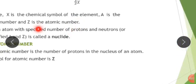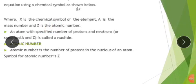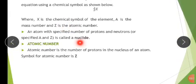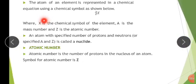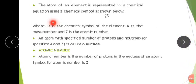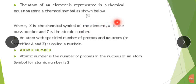Now, what does X mean? What does Z mean? And what does A mean? X is the chemical symbol of the element. For instance, X can be sodium, it can be uranium, it can be copper, among others.